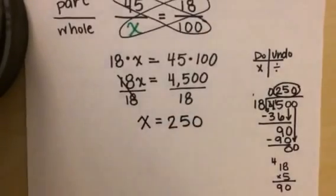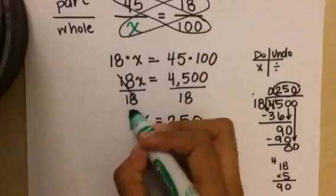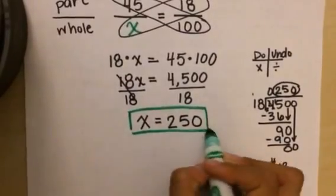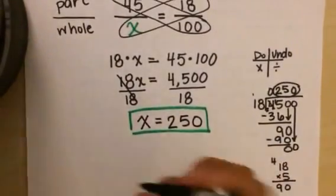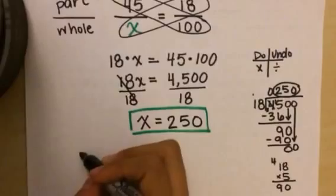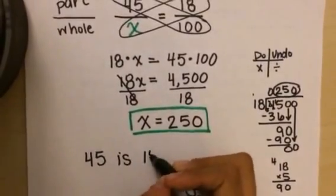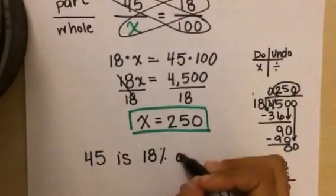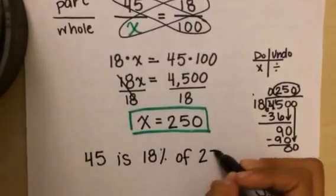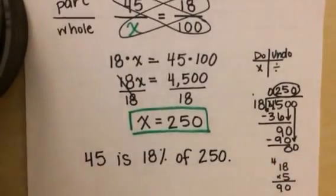just have our 1x over here. And there we have our solution to our problem: x is equal to 250. Which means that—let's go back to our original question—45 is 18 percent of 250. There we go! Thank you guys for watching, and have a great day.